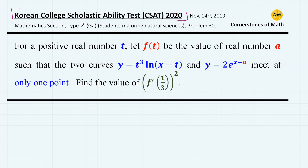The problem says: for a positive real number t, let f(t) be the value of real number a, such that two curves y equals t cubed ln x minus t and y equals 2e to the power of x minus a meet at only one point. Find the value of f prime of one-third, squared.